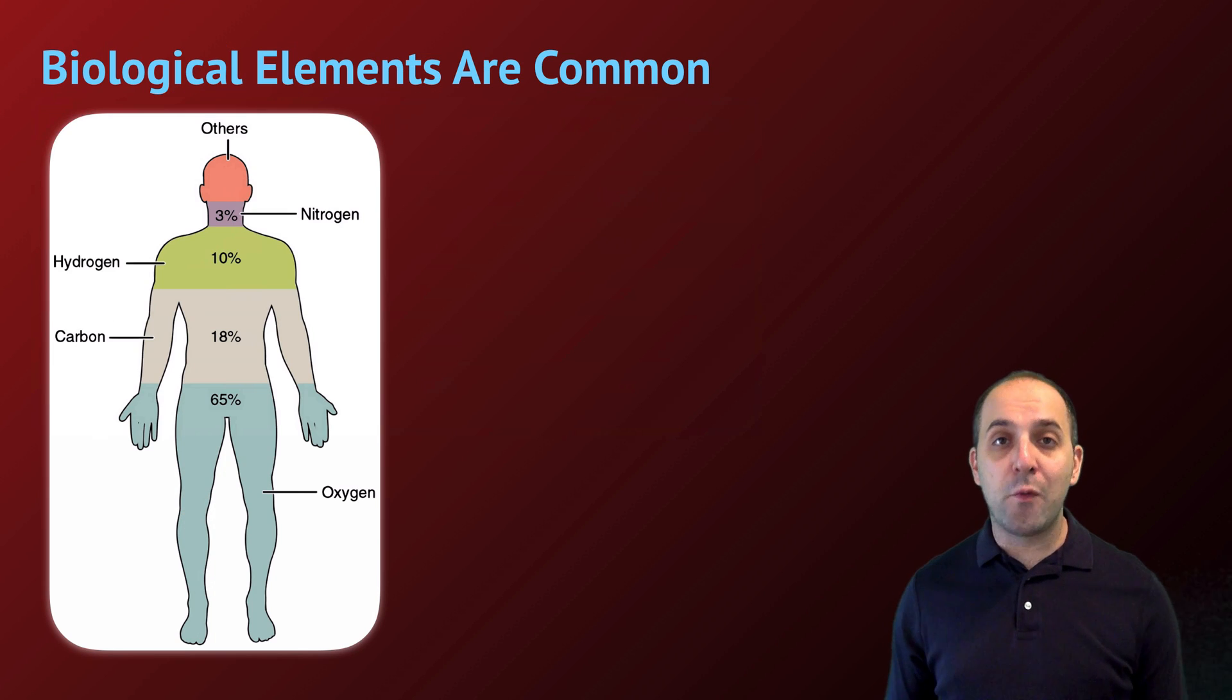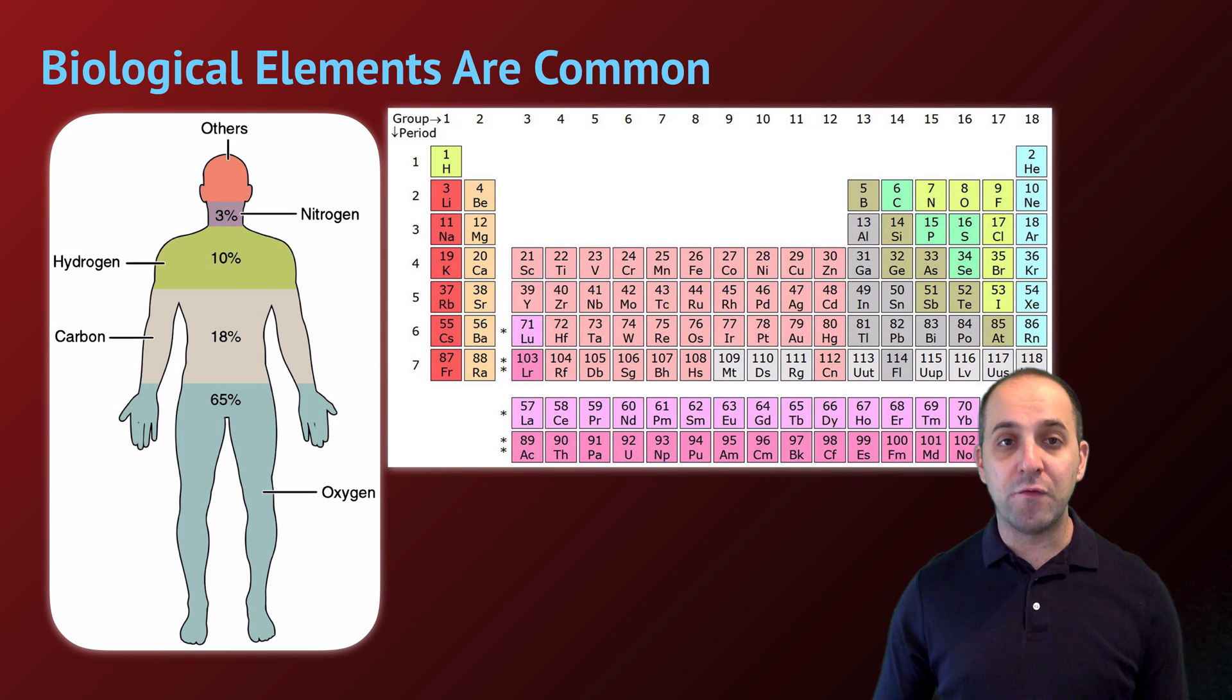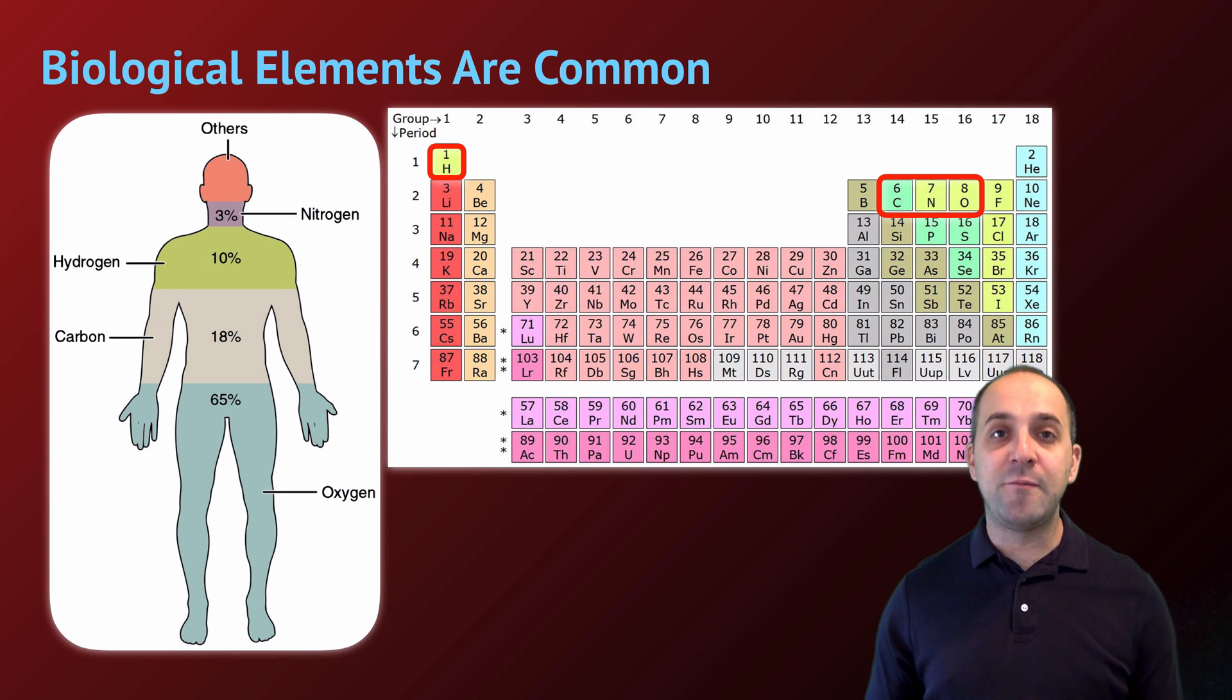They're engaged in processes that are resulting in this differential between the percentage of elements that we find in living systems as compared to the rest of the Earth. And we'll talk a lot about those processes over the course of both this unit and following units in this class. One point I want to make before we talk about matter cycles is that the elements that make up living systems are incredibly common in the universe.